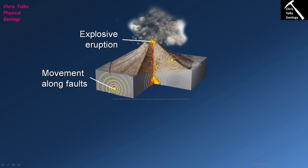A lot of volcanic activity is associated with areas that are heavily faulted — we get volcanoes at both divergent and convergent plate boundaries, and both environments are very heavily faulted. It's not uncommon for volcanoes to be situated near large faults, and processes around the volcano can cause nearby faults to move. For example, if a magma chamber starts filling up and expanding, it imparts stresses onto surrounding rock, and this expansion can impart enough strain onto a fault plane to cause it to move and produce an earthquake.